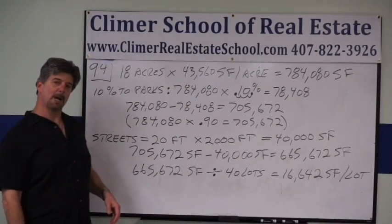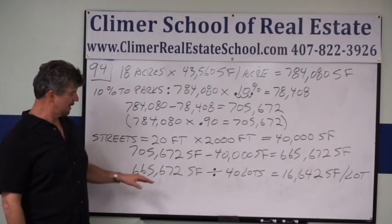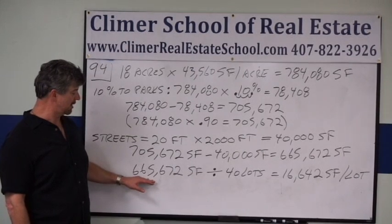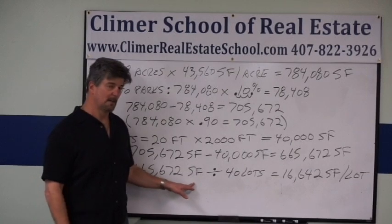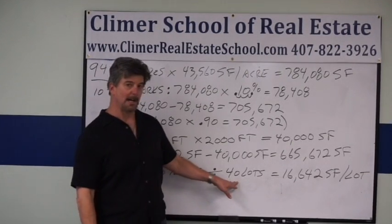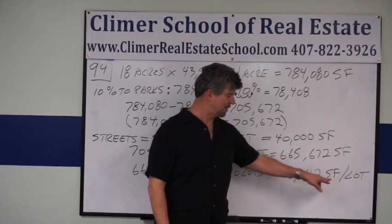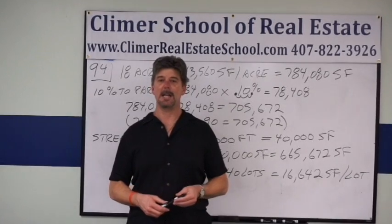We know from the problem, the developer wants 40 equal lots. Take your usable, developable land, in this case it's 665,672 square feet, divided by the 40 lots, and you get 16,642 square feet per lot. That's how you do it. They're pretty much all the same.